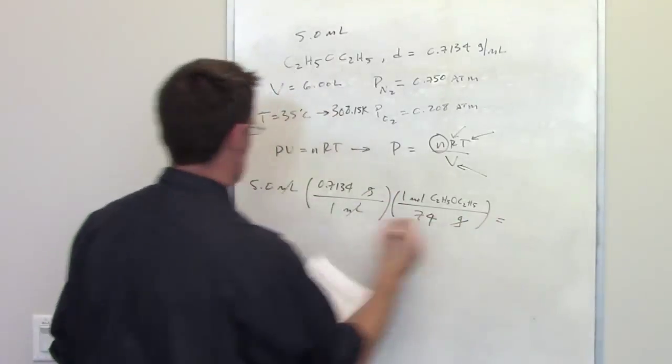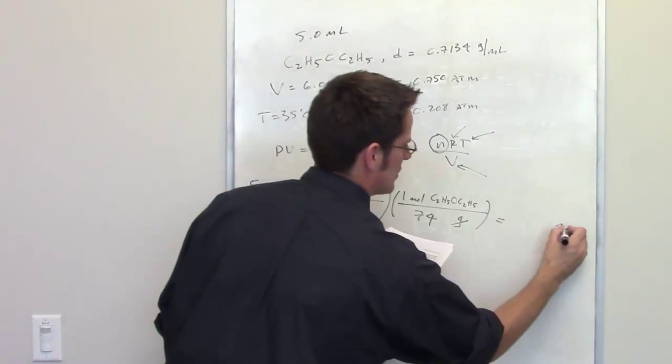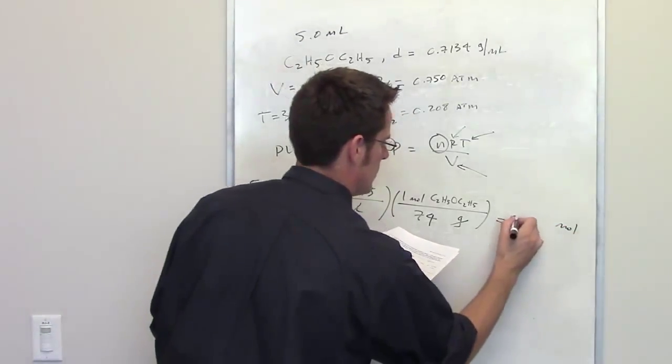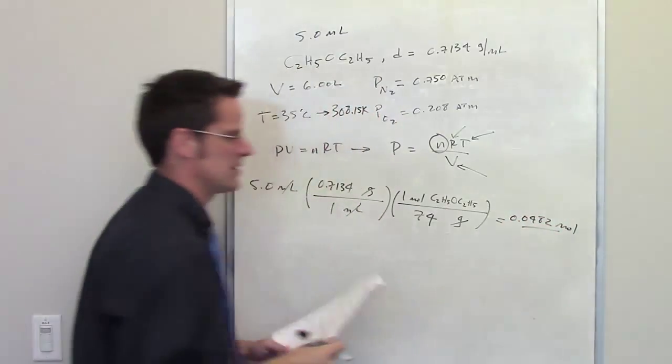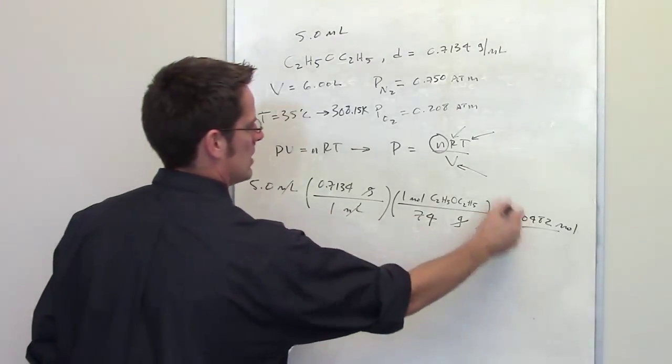The grams cancel each other out and I now have used this value and this density to determine the total number of moles of diethyl ether that we've actually thrown into this system, is 0.0482 and I'm kind of throwing sig figs under the rug for right now. So I now have N, the total number of moles.